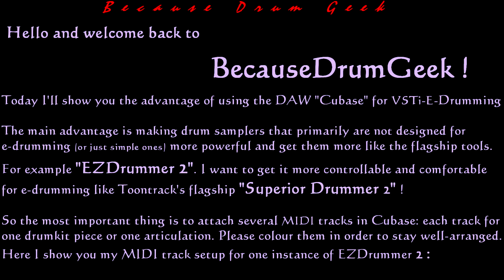I want to get it more controllable and comfortable for e-drumming, like Toontrack's flagship Superior Drummer 2. The most important thing is to attach several MIDI tracks in Cubase, each track for one drum kit piece or one articulation. Please color them in order to stay well arranged.